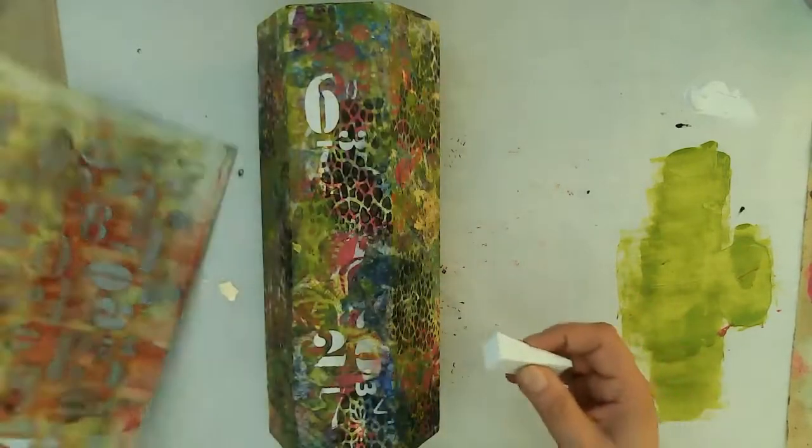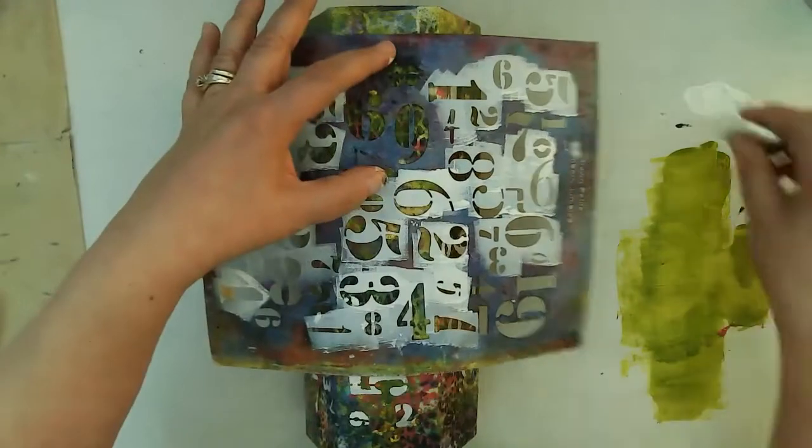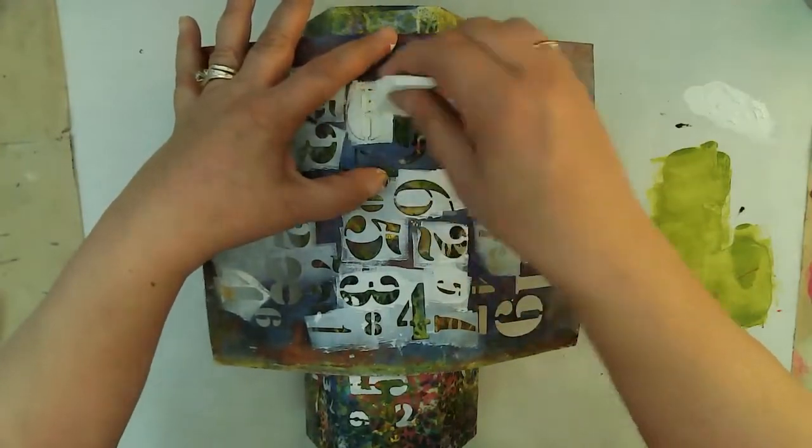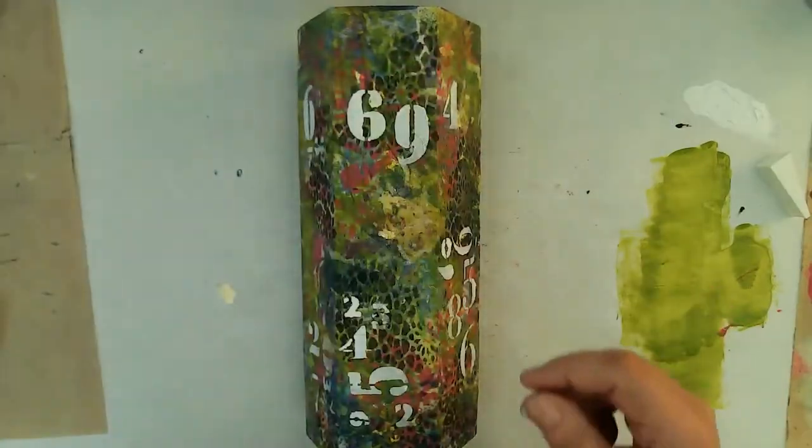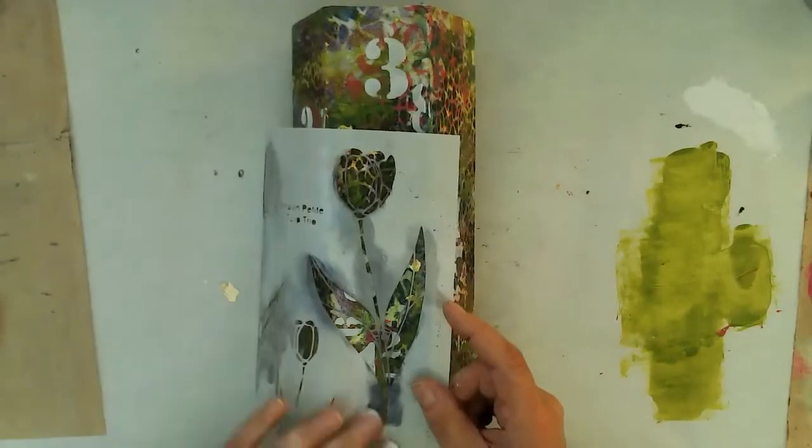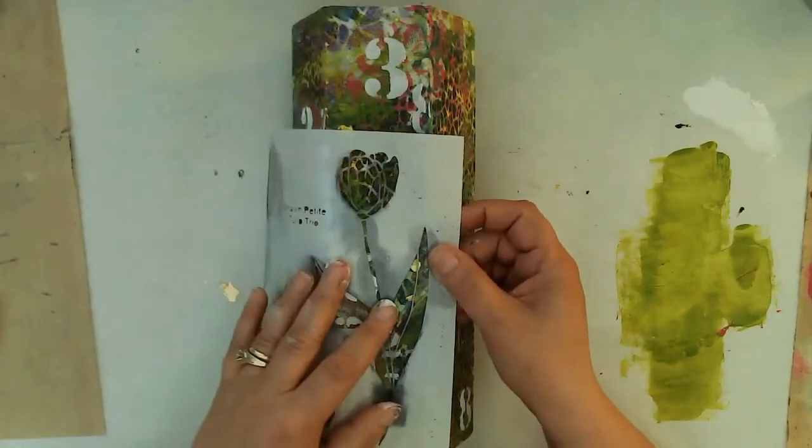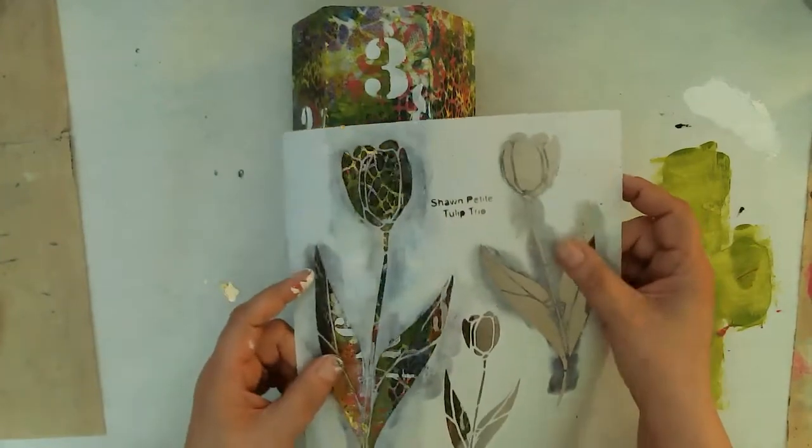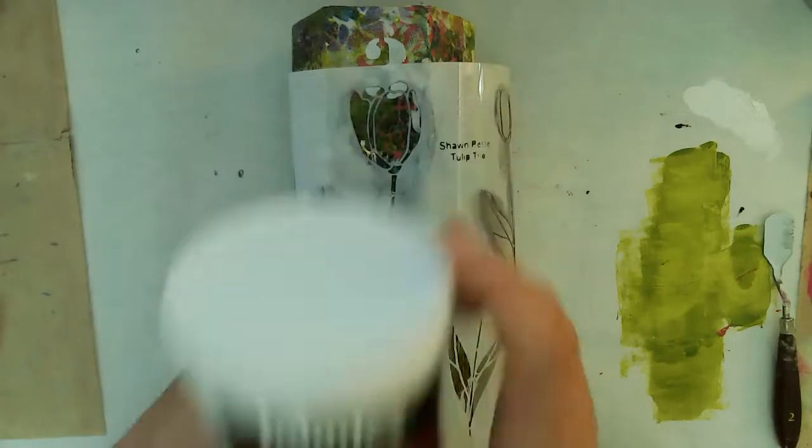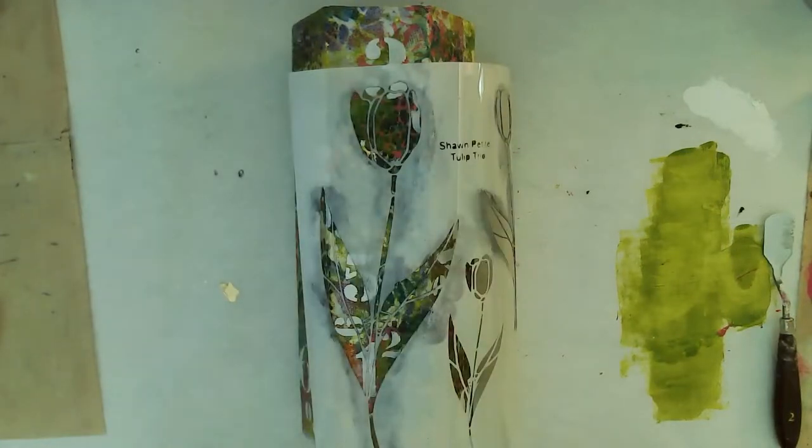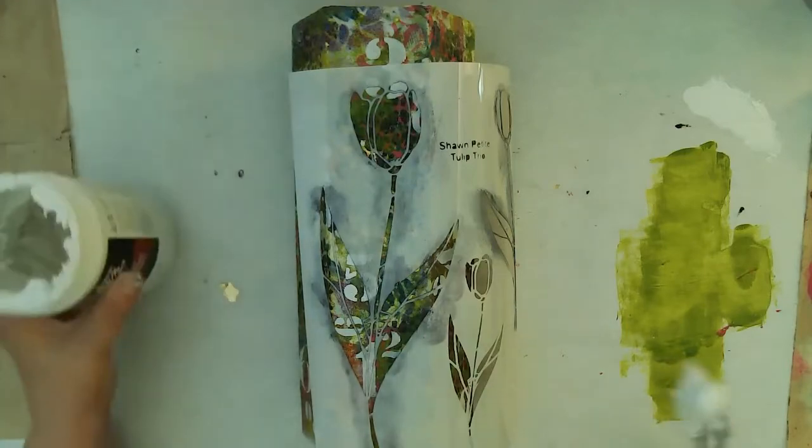I do that also to the lid. So the video process for this project was fairly long so I did cut out a lot of unnecessary repetition. Everything that I do on the box I also do on the lid. Now I'm going to use Shawn's tulip stencil. I was kind of deciding how big I wanted that tulip to be as I didn't want it to interfere with the latch that's going to go up above. So the large size tulip was perfect.